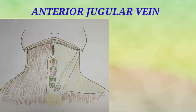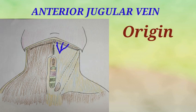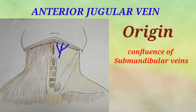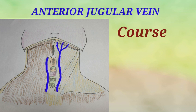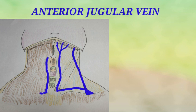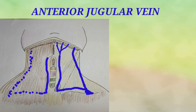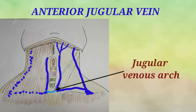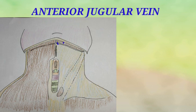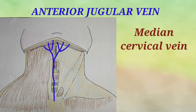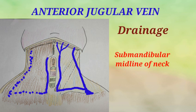The anterior jugular vein originates from the confluence of the superficial submandibular veins near the hyoid bone. It courses downwards on the lateral aspect of the anterior median line. On reaching the clavicle, it turns laterally under cover of the sternocleidomastoid muscle and pierces the deep fascia to join the external jugular vein. Sometimes it may directly end into the subclavian vein. In the suprasternal space, it communicates with the fellow of the opposite side by a transverse branch called the jugular venous arch. Sometimes there is a variation in which both anterior jugular veins are united to form a single trunk called the median cervical vein.